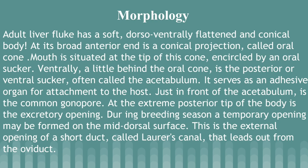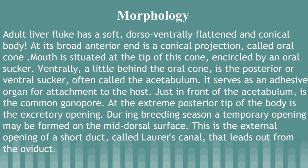Morphology of Fasciola hepatica: The adult liver fluke has a soft, dorsoventrally flattened and conical body. At its broad anterior end is a conical projection called the oral cone. The mouth is situated at the tip of this cone, encircled by the oral sucker. A little behind the oral cone is the ventral sucker, often called the acetabulum, which serves as an adhesive organ for attachment to the host. Just in front of the acetabulum is the common gonopore. At the extreme posterior tip of the body is the excretory opening. During breeding season, a temporary opening called Laurer's Canal may be formed on the middorsal surface, leading out from the oviduct.